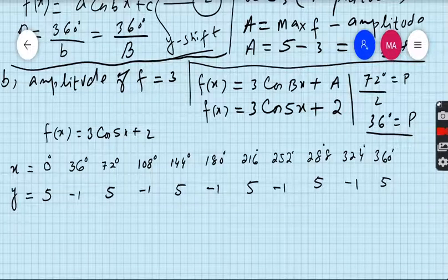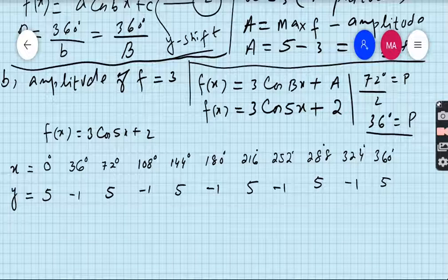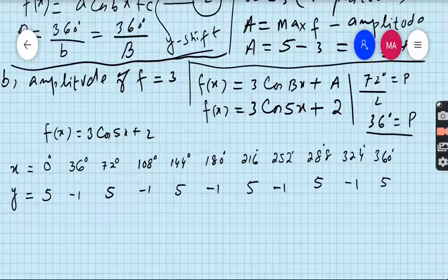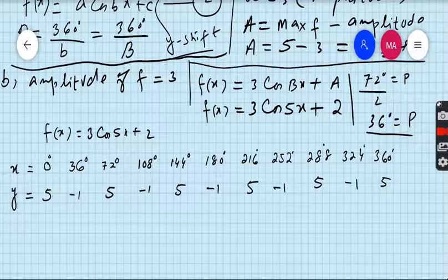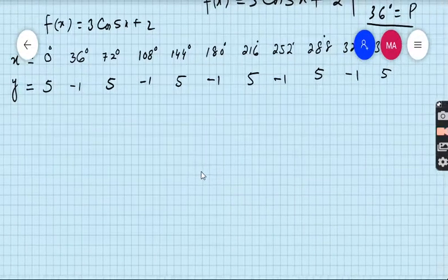And now take the calculator. Write in your calculator 3cos(5 times 0) plus 2 and press the equal button, you will get 5. Then 3cos(5 times 36) plus 2, you will get negative 1. 3cos(5 times 72) plus 2, you will get 5, and so on. You have to find each and every value with the help of your calculator. After making the table, the last step which is very important is to draw the graph.